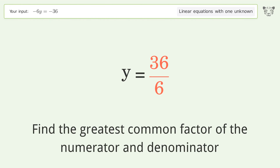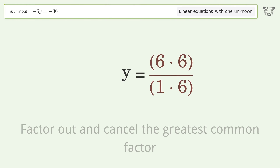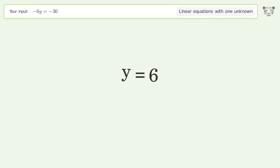Find the greatest common factor of the numerator and denominator. Factor out and cancel the greatest common factor. And so the final result is y equals 6.